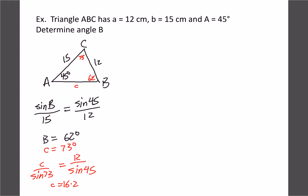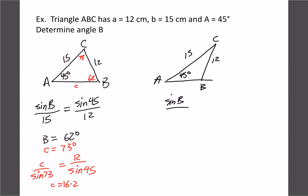You might ask, what's the problem? Well, there isn't one if that's the way the triangle was supposed to be drawn. But we could have drawn this same triangle with the 15 and 45 degrees the same, but with the 12 coming back down instead of outward. So B and C would look different. If we try to solve for angle B this time, we'd have sine B over 15 and sine 45 over 12 — the exact same calculation — and the calculator still gives us 62 degrees. But that angle looks a lot bigger than 62, so we run into a problem.